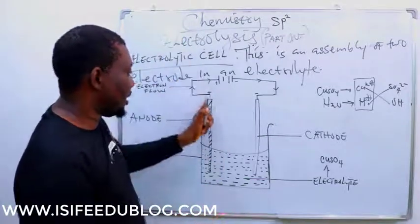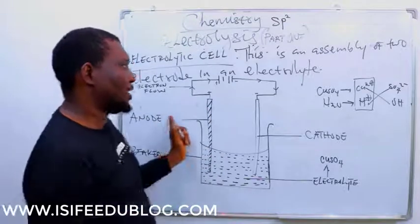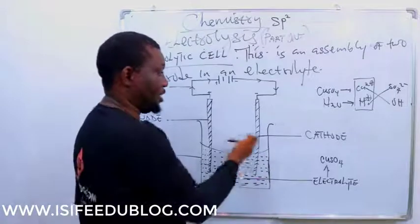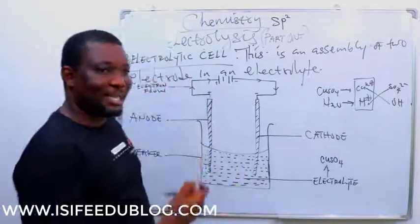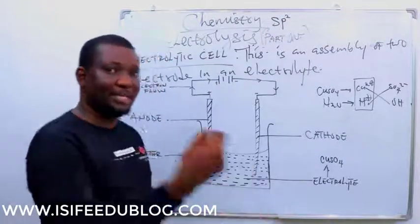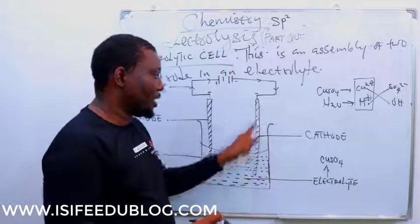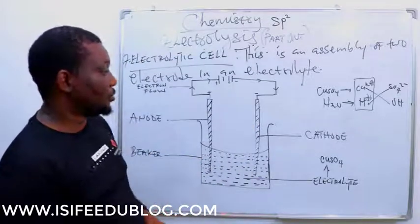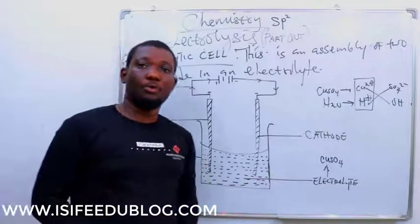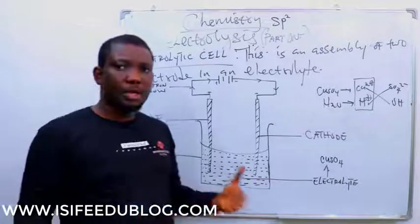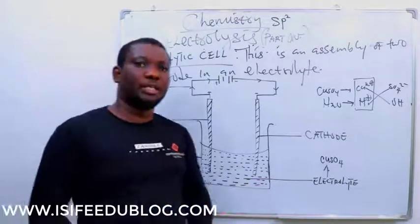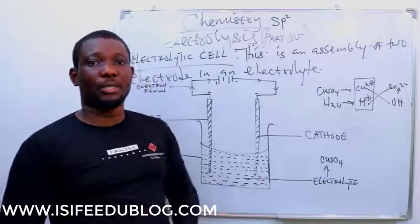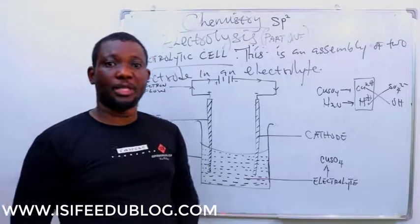As electrons flow out from the anode, the anode becomes electron-deficient. At the cathode, electrons enter, making it electron-sufficient. When a cation migrates to the cathode, it gains an electron. Since the cathode has more electrons than the anode, electrons flow from the anode into the cathode. This is the working model of an electrolytic cell. The next objective will cover the mechanism of electrolysis and preferential discharge of ions.